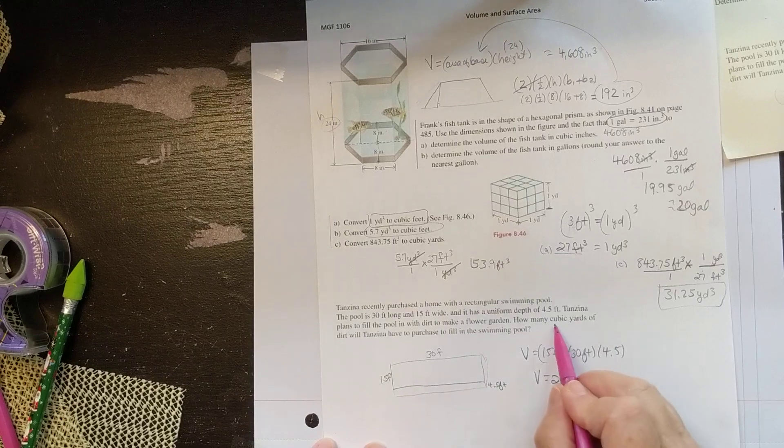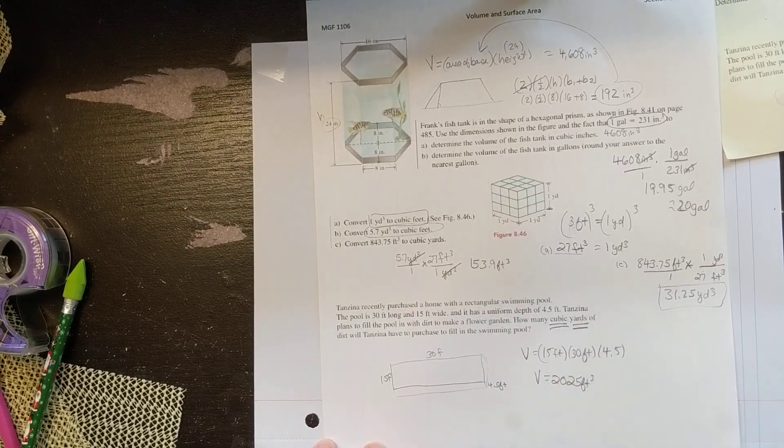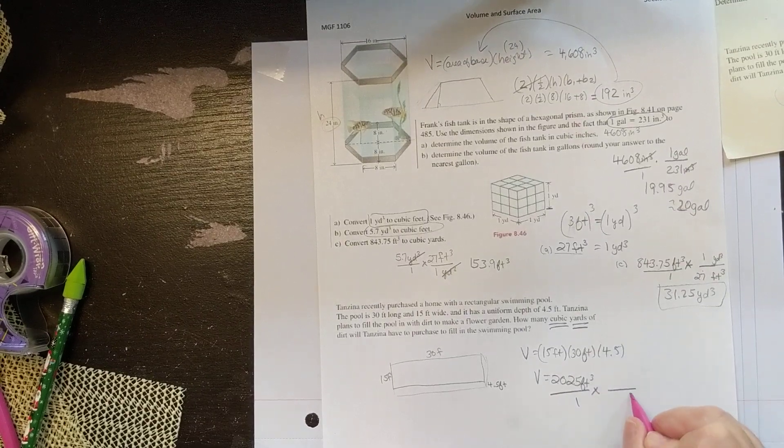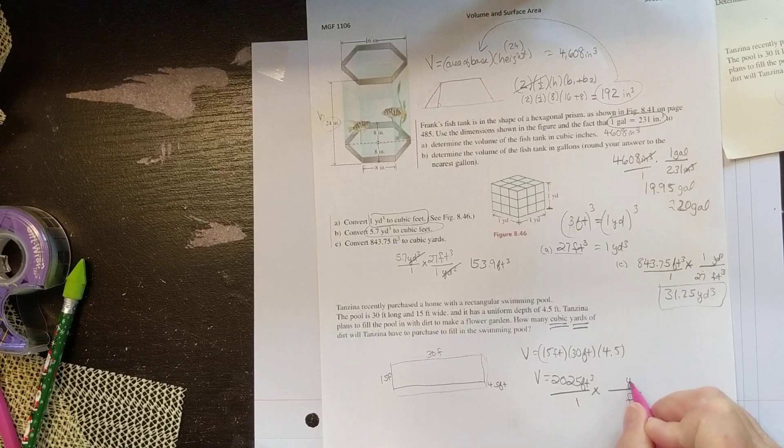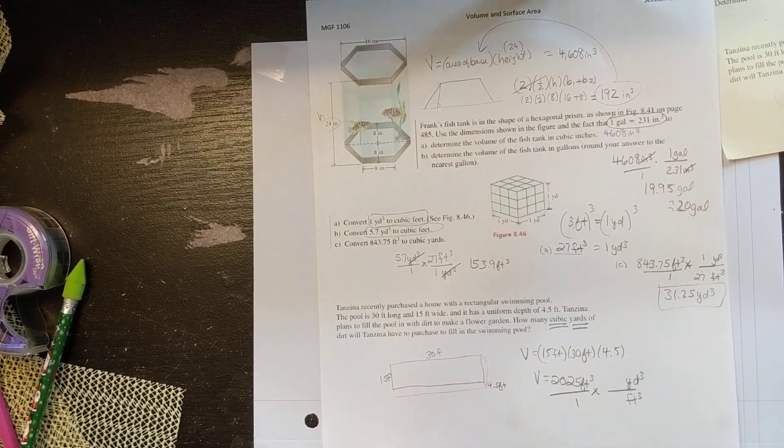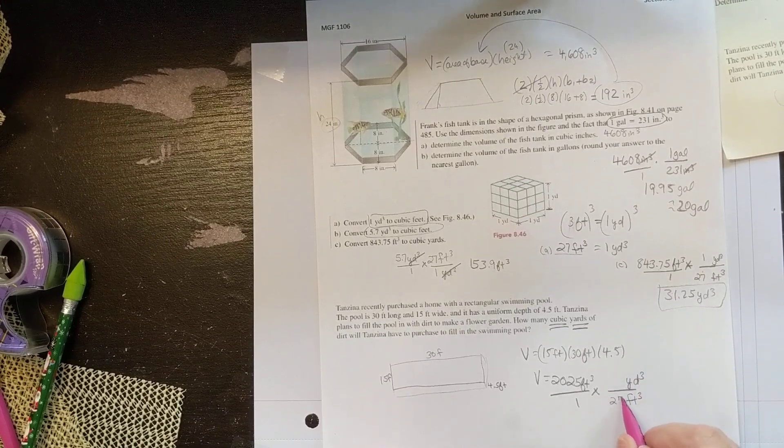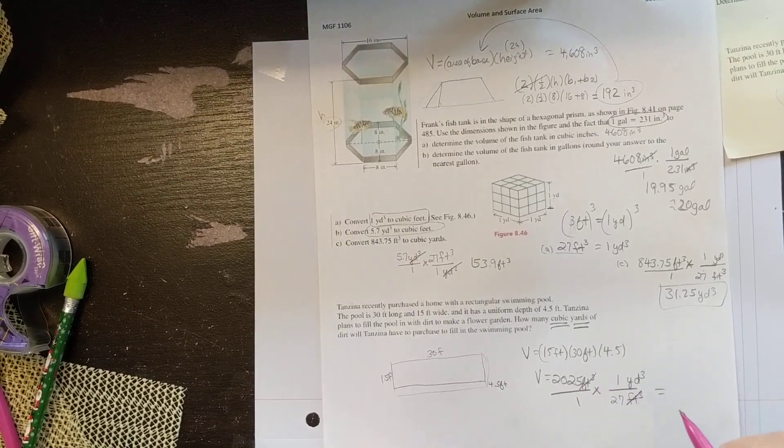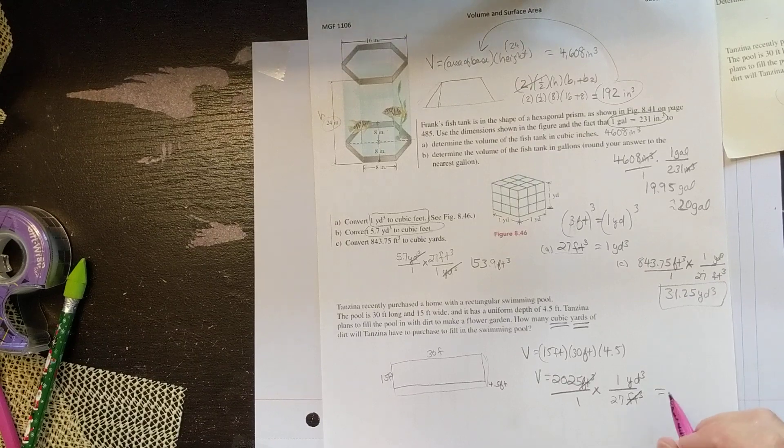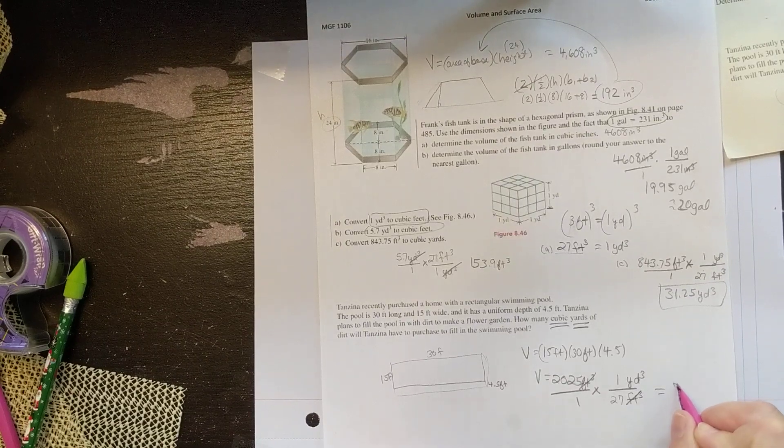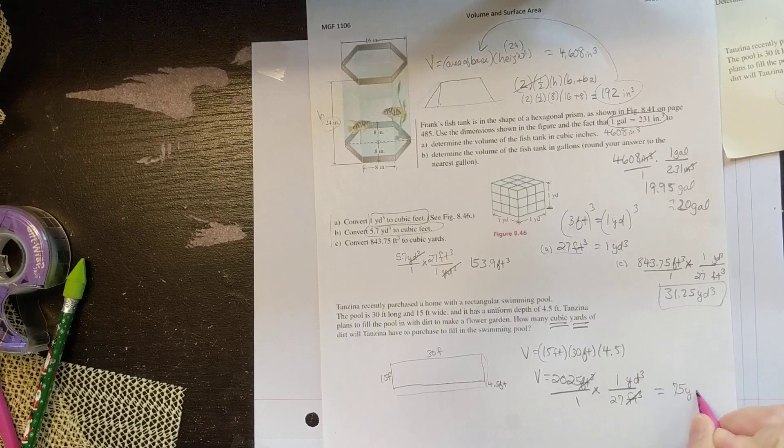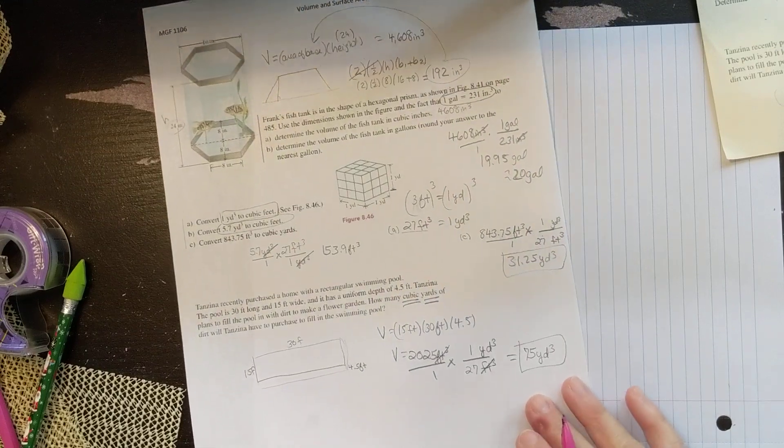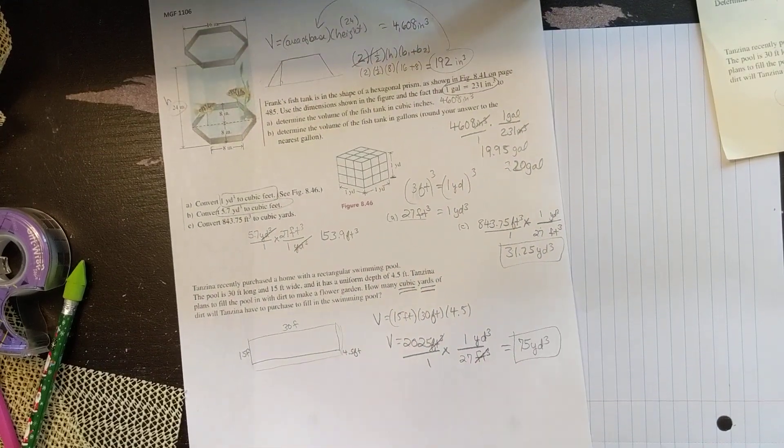But if we need to know how many cubic yards this needs, we want to use a conversion factor and I want to get rid of the feet. So I'll put the cubic feet down here. I'll put the cubic yards up here and 27 goes with the feet and 1 goes with the yards and these will cancel. So if I take 2,025 and divide it by 27, I get exactly 75 cubic yards. So that is how much dirt she's going to need to fill her pool. This is going to be very cool.